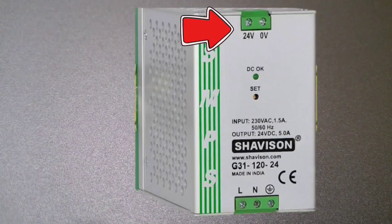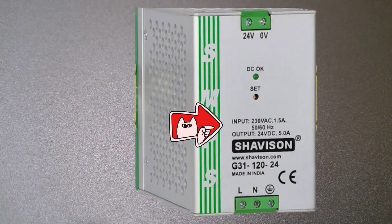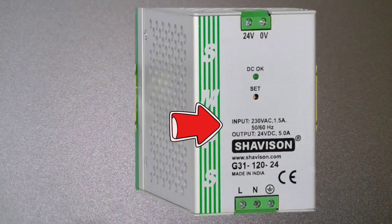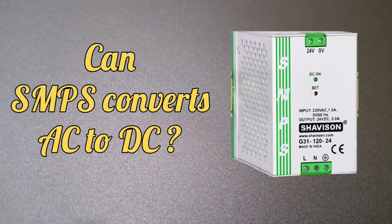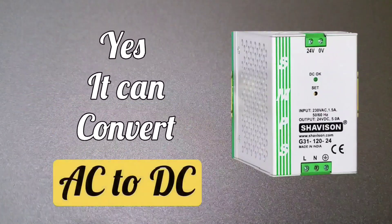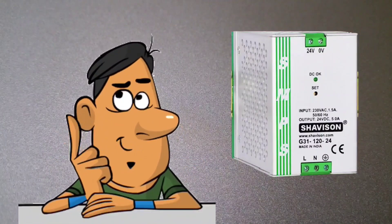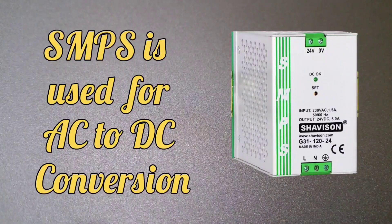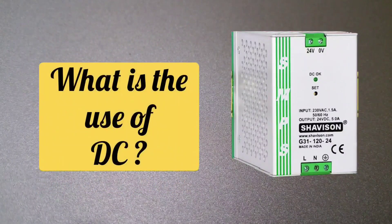It is given 220V AC supply and SMPS converts it into 24V DC supply. Its input is 230V AC and its output is 24V DC. Here you can also be asked this question: can SMPS convert AC to DC? The answer is yes, SMPS can convert. After this you can be asked this question: you have converted AC to DC from SMPS, but what is the use of that DC?